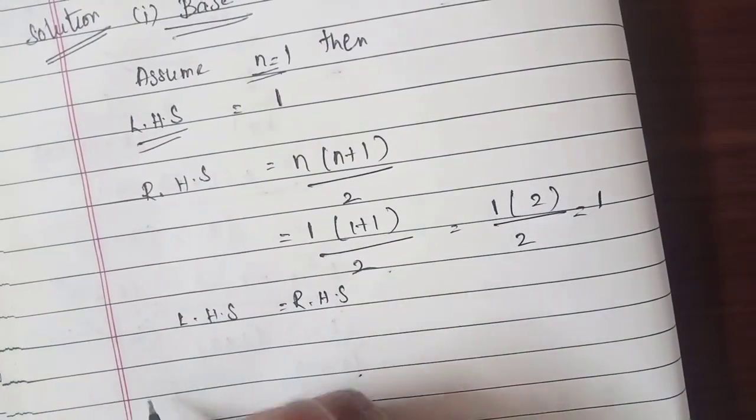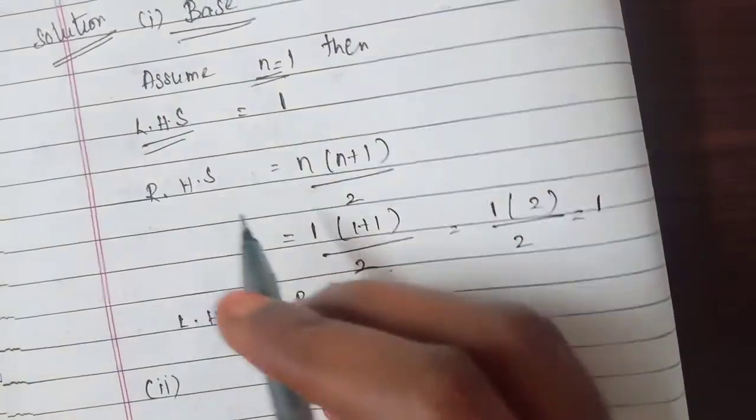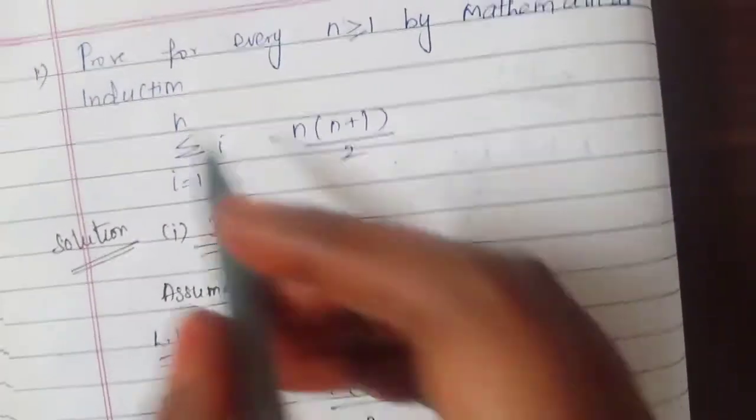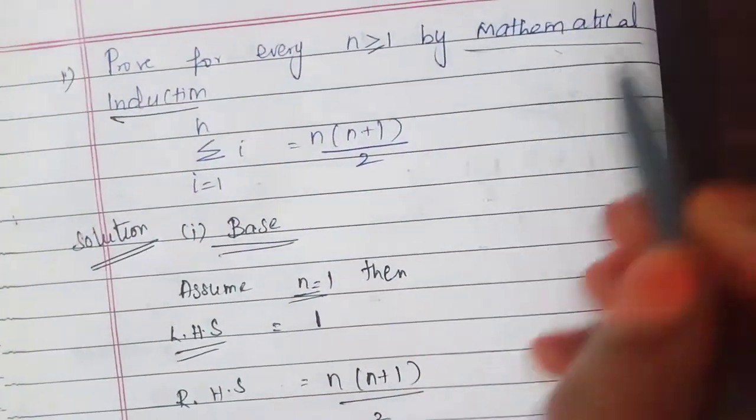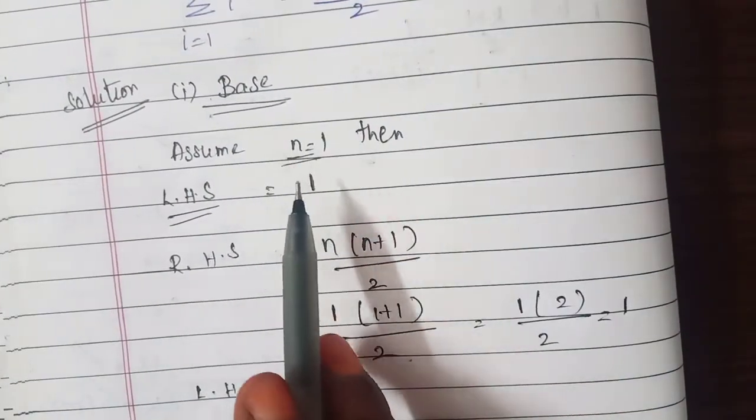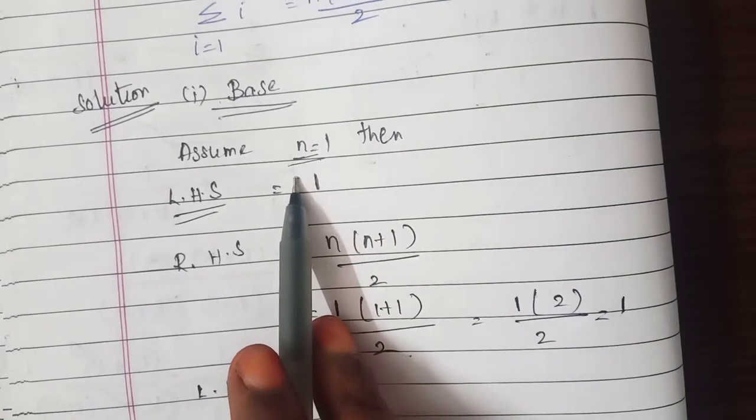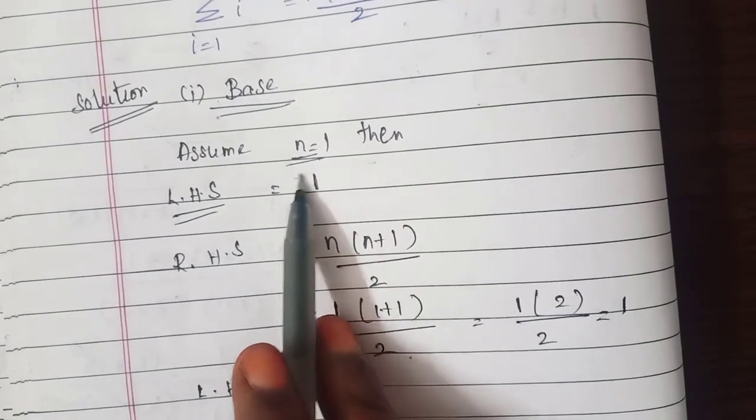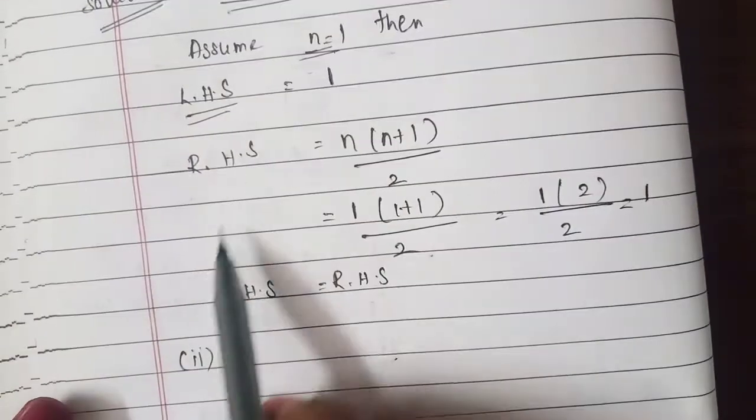Next we will have a second case. So we need to solve by using induction method we need to solve two scenarios. First using base case. Here we need to check, we'll assume n equal to 1 and prove for LHS equal to RHS.